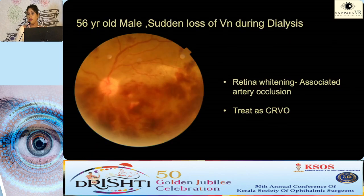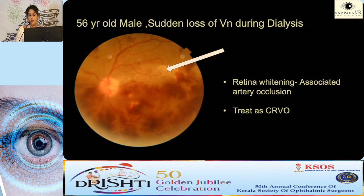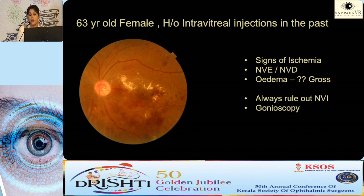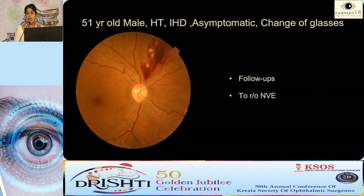Sudden loss of vision during dialysis: a case of hemi-CRVO. When visual loss is out of proportion to what you see — note this whitening of the retina — it is actually a combined occlusion; treat as CRVO but don't miss it. Chronic CRVO: look regularly for signs of ischemia, NVE, NVD, and NVI. Gonioscopy should be routinely done. Nasal BRVOs, even if asymptomatic — don't just leave the patient. Follow up, as they can end up with a vitreous hemorrhage later and ischemia must be assessed.